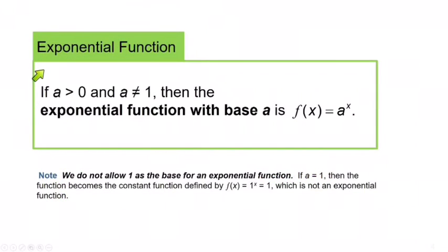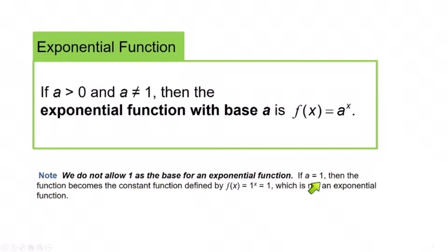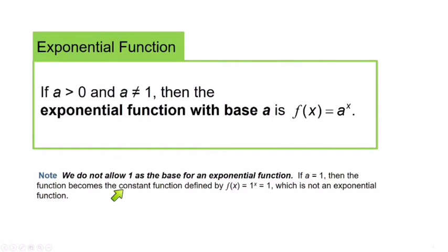What we did in example 1 was evaluate an exponential function. An exponential function is one in the form f(x) = a^x, where a is a positive number not equal to 1. We don't allow 1 as the base because if a = 1, the function becomes the constant function — 1 to the x is always 1, no matter what you plug in. So it would just be a horizontal line, not an exponential function.